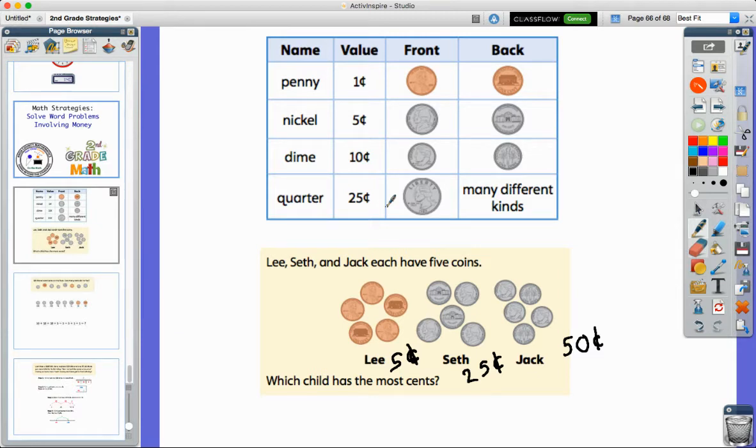The question said which child has the most. Well, five cents, 25 cents, or 50 cents? We know that our friend Jack here has the most money. He's got 50 cents or half of a dollar.